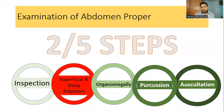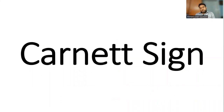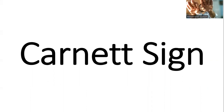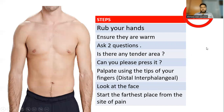The second step after inspection is superficial and deep palpation. First, perform Carnett's sign: ask the patient to raise their head against resistance by placing your hand on their forehead and asking them to push up, which increases intra-abdominal pressure. Alternatively, ask the patient to lift both legs together against resistance. If there is an intra-abdominal mass or defect, it will protrude and become prominent.